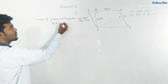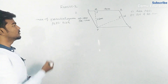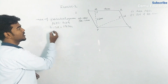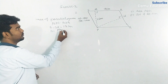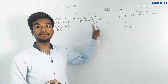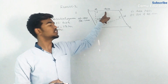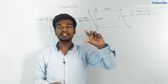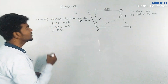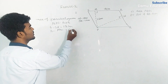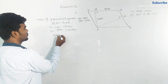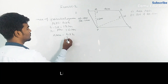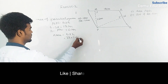Area of parallelogram PQRS equals base into height. Base SR equals 12 centimeters. For the height, we must take PM, which makes 90 degrees with base SR — we should not mix PN with this base. PM equals 7.6 centimeters, so area equals 12 into 7.6 centimeters.